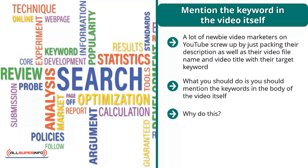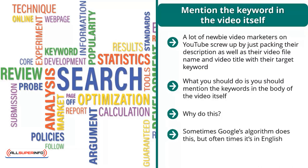So you upload a video and after a few hours there will be a transcription. You're out of luck when the transcription is in another language — sometimes Google's algorithm does this — but oftentimes it's in English. With this transcription, Google can determine whether your video actually talks about the keywords that you put in your description, title, or file name.